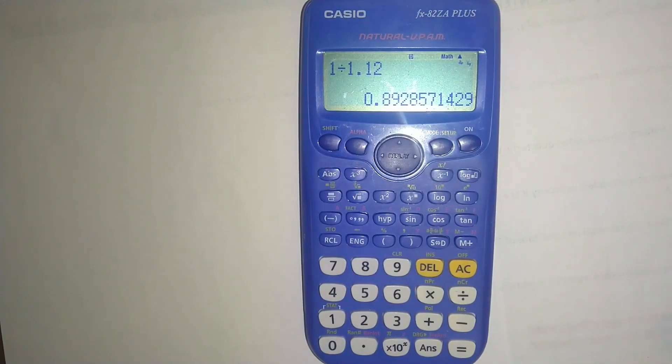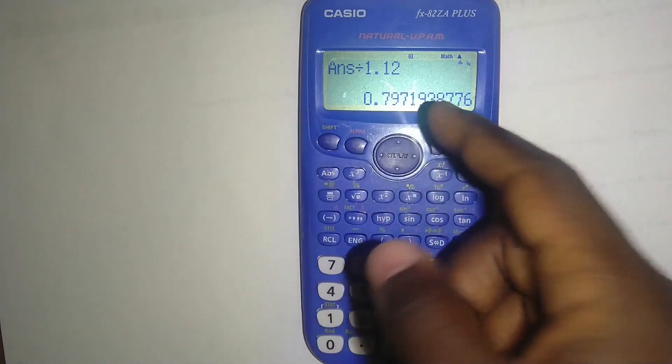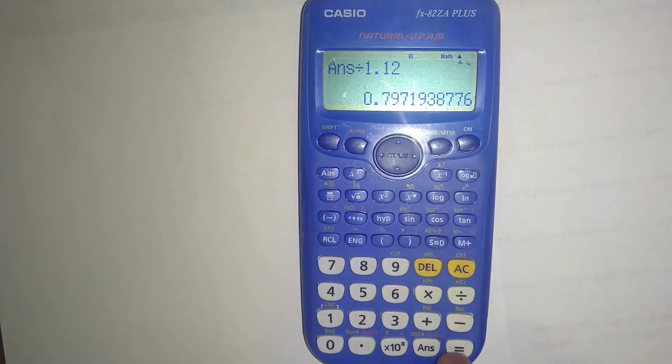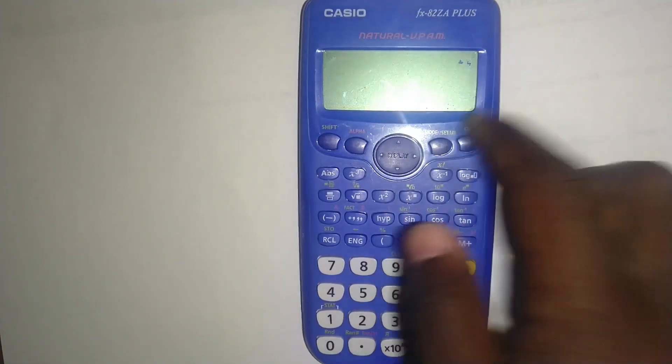And how do you get the second year? You just divide by 1.12 again and it has given you 0.797 for the second year. For the third year, you just now press equals. For the fourth year, equals, and so on. Fifth year, equals, and so forth. That's as simple as you do it using this calculator.